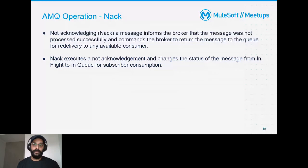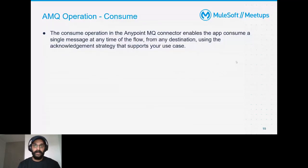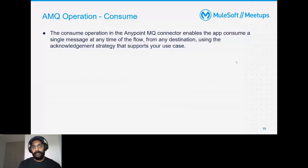NACK — negative acknowledgement — informs the broker that the message has not been processed successfully and should be returned to in-queue mode from in-flight for the next available consumer. Consume operation takes one message at a time from any destination — FIFO or standard queue — and depending on your acknowledgement strategy, you handle ACK, NACK, automatic, or immediate.